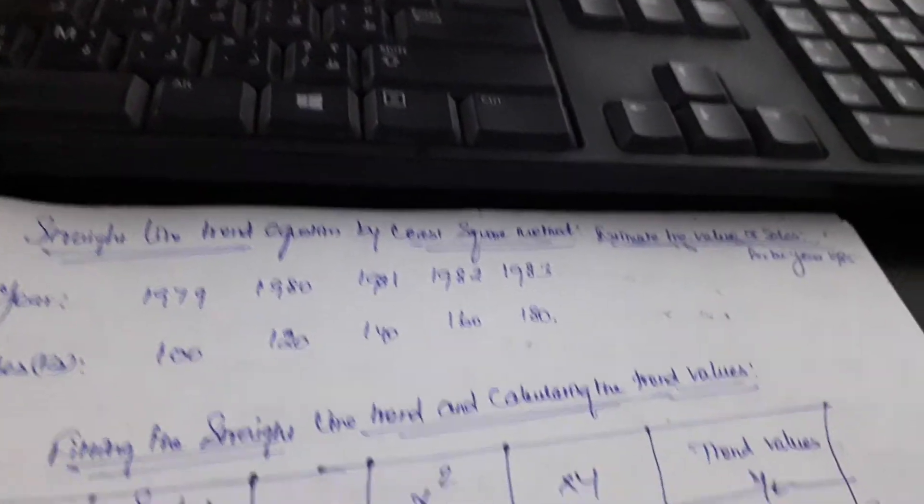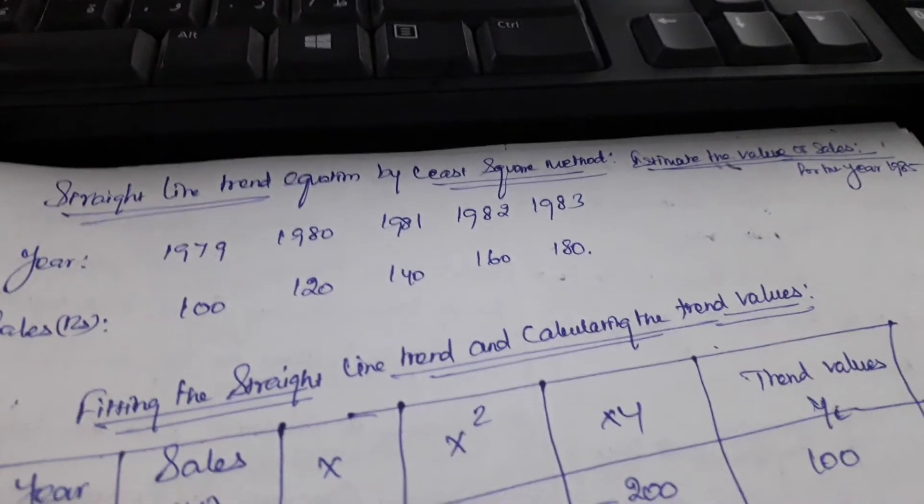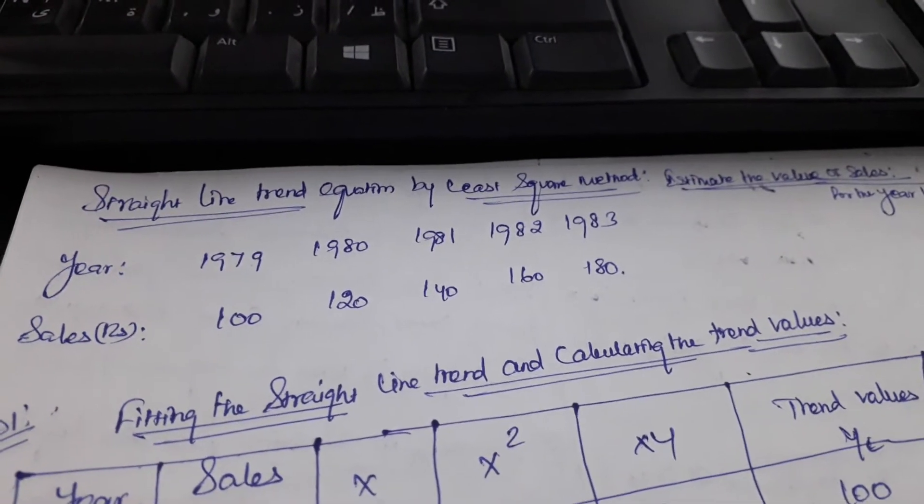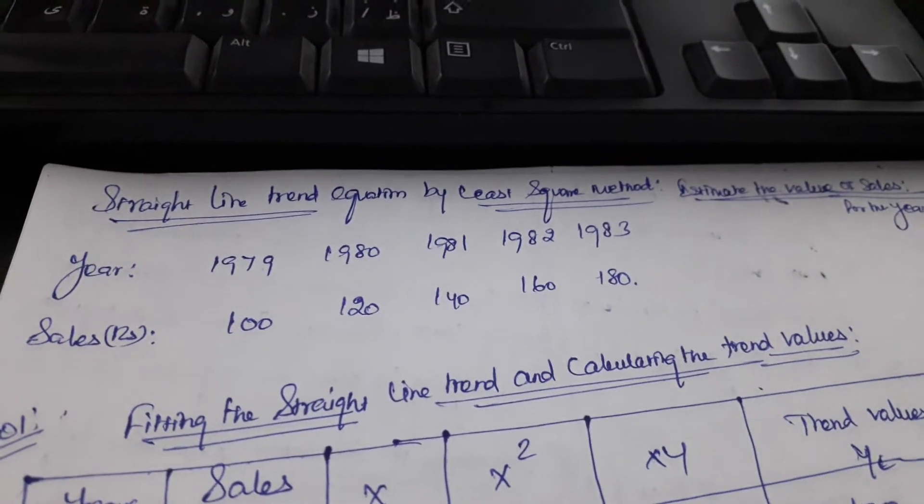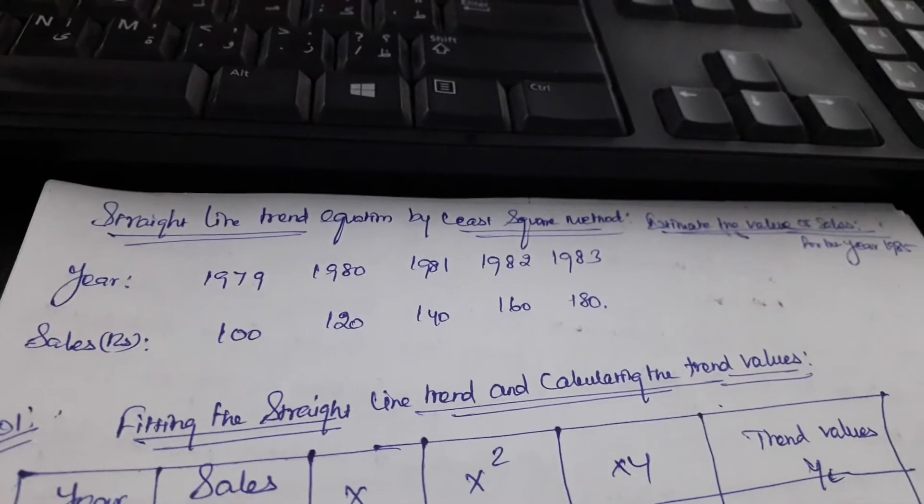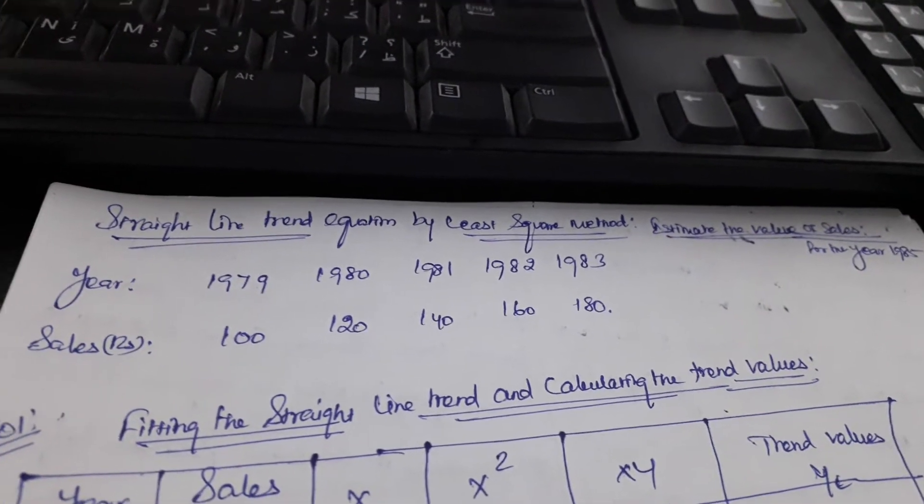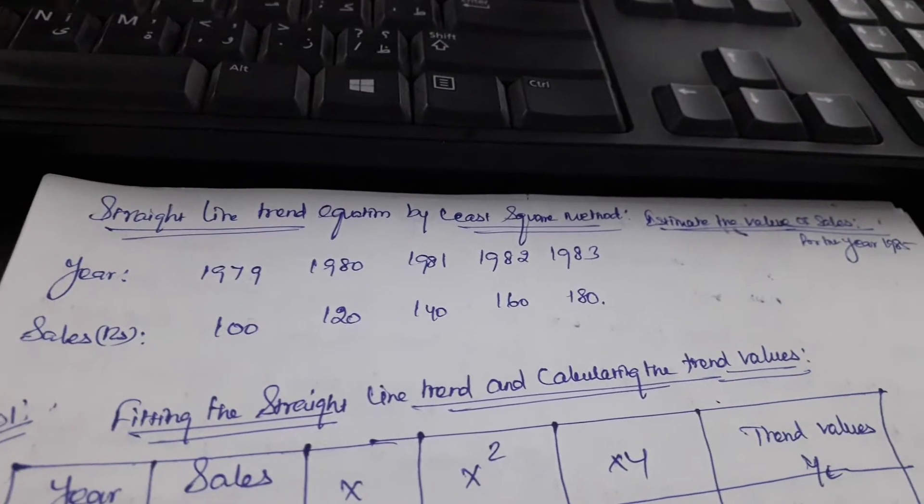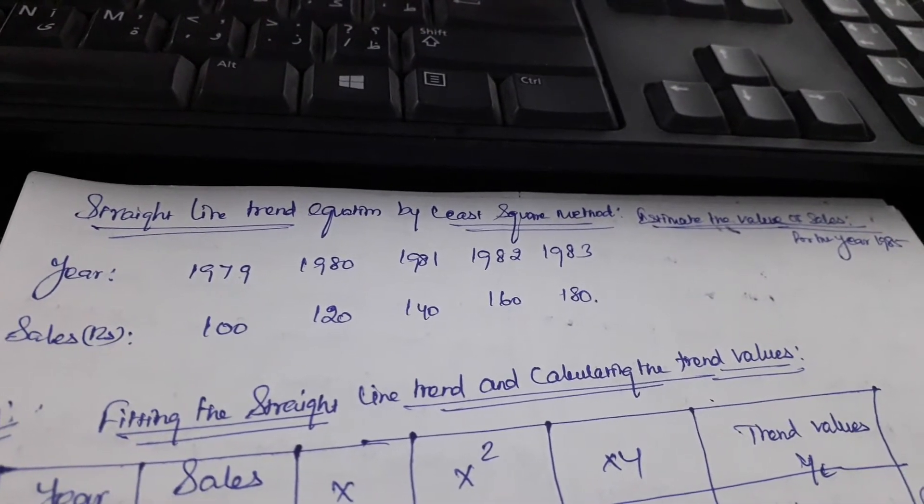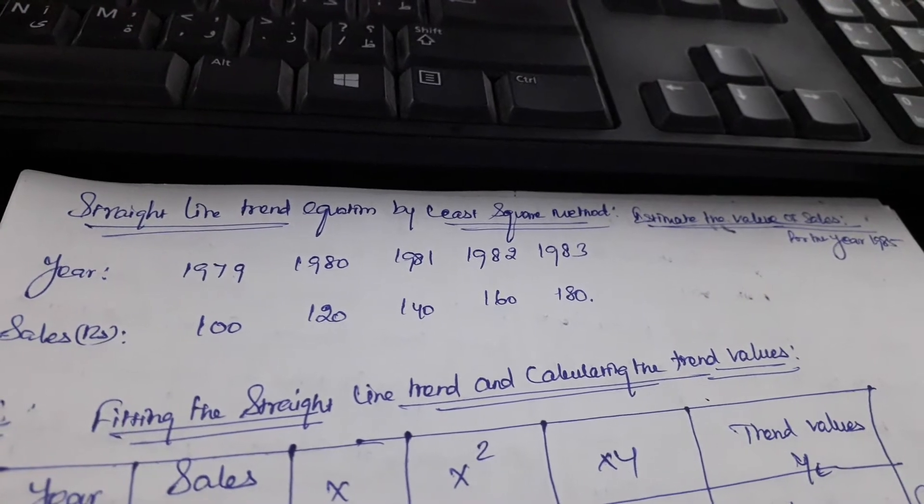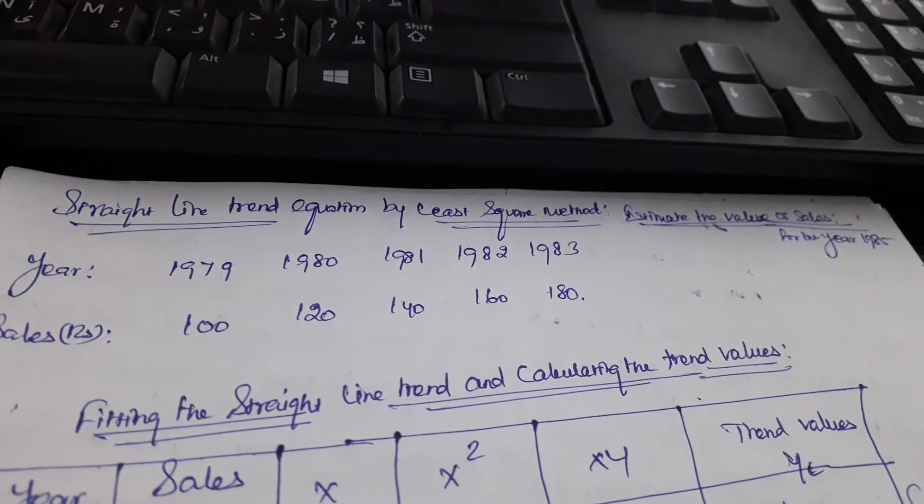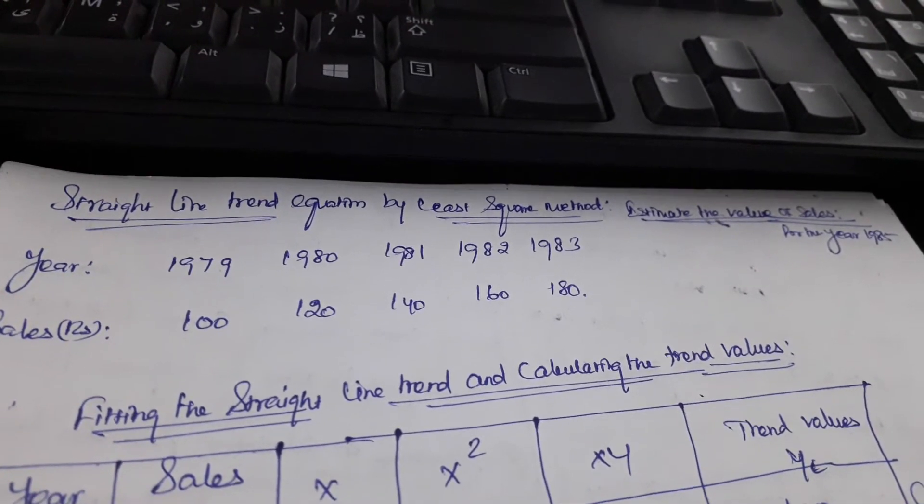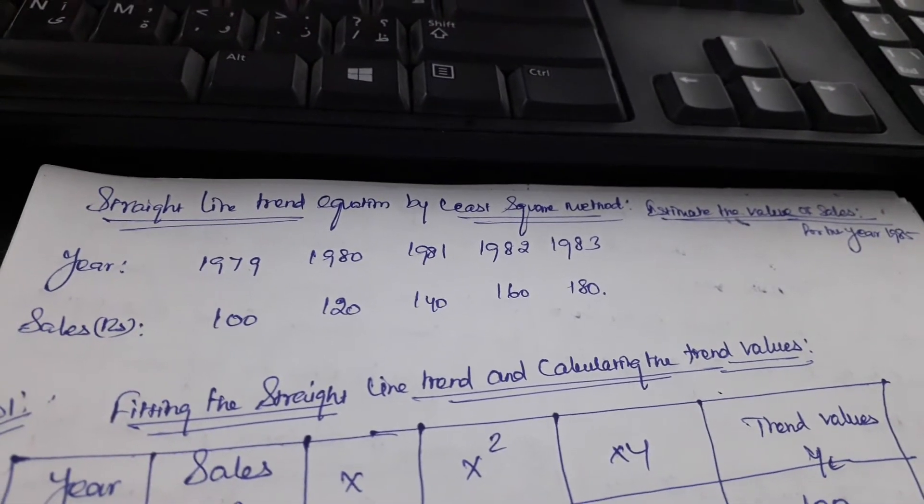This is usually used for forecasting of sales and similar applications. The least square method is a statistical procedure to find the best fit for a set of data. It is the most appropriate method in time series.